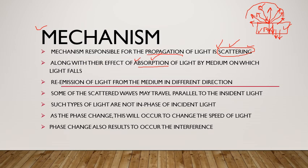جس body نے light absorb کی ہے وہ اسے re-emit کرے گی۔ یہ re-emission اس light کی ہے جو اس material نے absorb کی ہے — ساری light absorb نہیں کی، کچھ part absorb کیا۔ جیسے black color کی گاڑی دھوپ میں کھڑی رہے، بہت زیادہ light absorb کر لے، heat up ہو جائے، اور پھر جب چھاؤں میں لے جائیں تو وہ absorb کی ہوئی energy re-emit کرنا شروع کر دے گی اور original condition میں واپس آ جائے گی۔